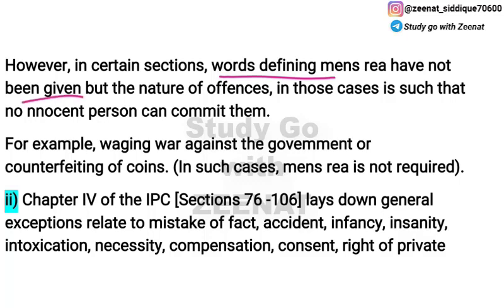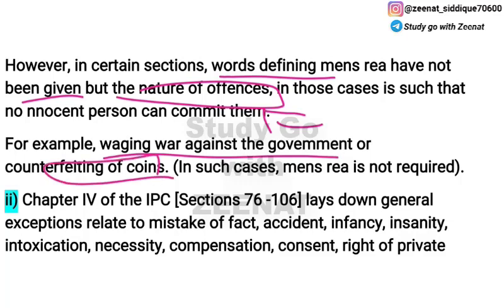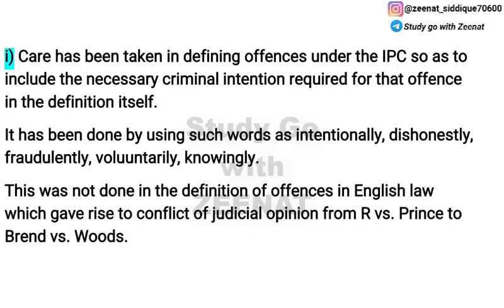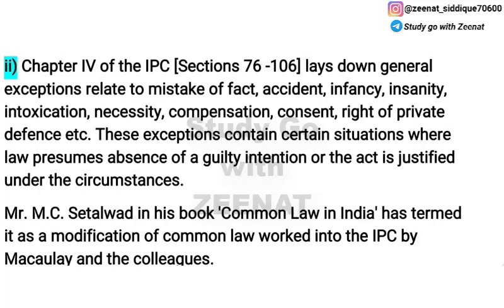First, where criminal intention is required in a particular offense, it is mentioned through specific words — like 'intentionally,' 'knowingly,' 'fraudulently,' 'voluntarily,' 'deliberately.' Using such terminology in the offense definition, the criminal intention — mens rea — is implicitly made part of the offense definition. For some offenses like waging war against the Government of India or counterfeiting coins, mens rea is not required.